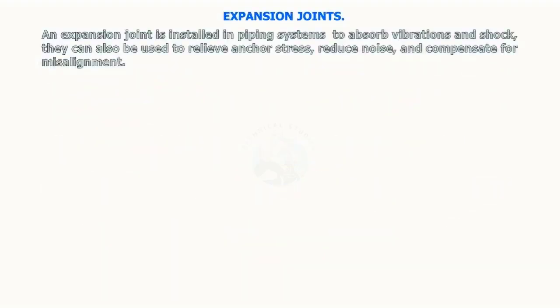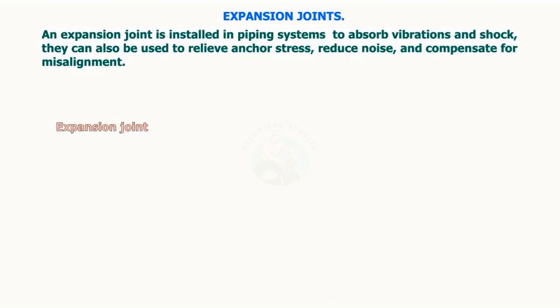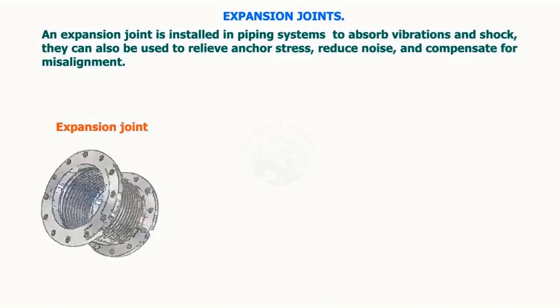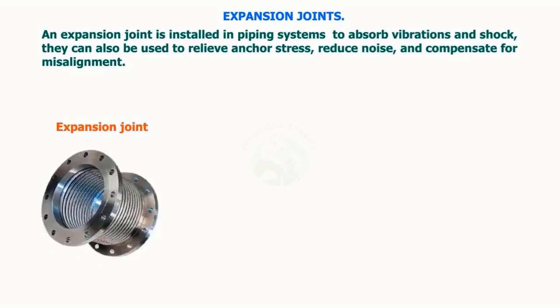An expansion joint is installed in piping systems to absorb vibrations and shock. They can also be used to relieve anchor stress, reduce noise, and compensate for misalignment.